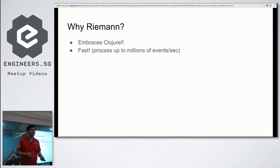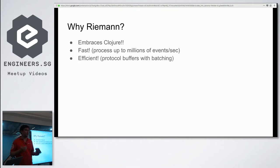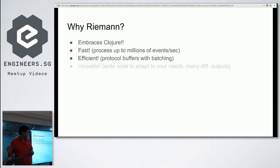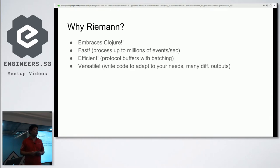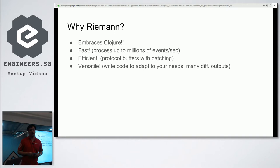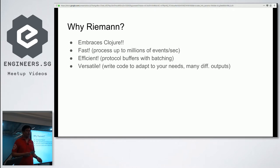Riemann is fast — it makes full use of the concurrency primitives in Clojure to process up to millions of events per second on a single hardware instance. It's also efficient, using protocol buffers, a binary protocol, and you can batch events when sending to Riemann. Finally, it's extremely versatile because you have the full power of Clojure at your disposal. Riemann also ships with lots of outputs — it can send events to Elasticsearch, InfluxDB, Graphite, and so on.